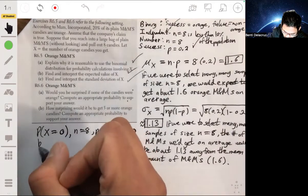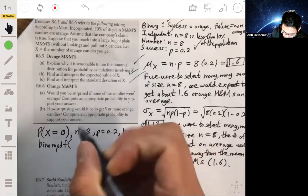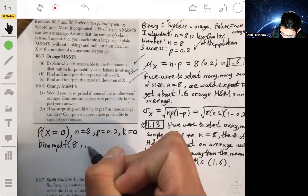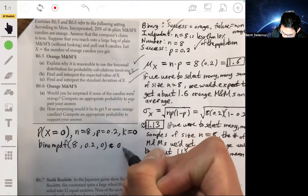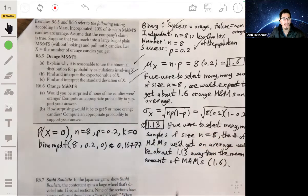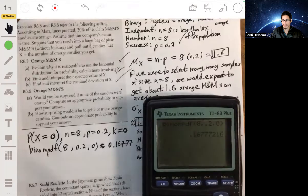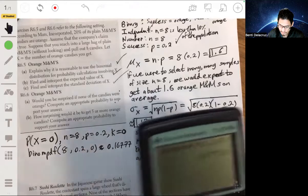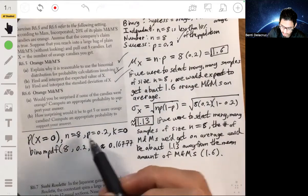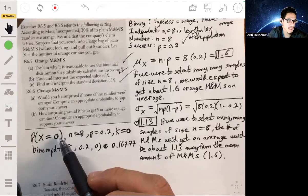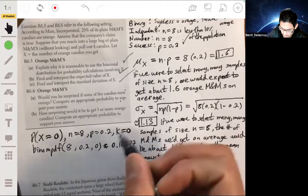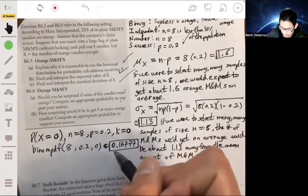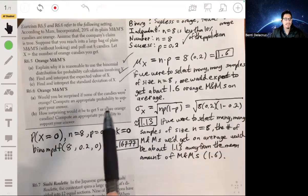We're going to use our calculator. We go to distribution, go to binomial PDF, and the syntax is N, P, K. So N is eight, P is point two, K is zero. Binomial PDF 8, 0.2, 0, and I get about a probability of 0.6777. If you have a newer calculator, a newer version, you won't have to memorize the syntax. It's going to probably have space for you to enter N, P, and K explicitly. So the probability that we would expect to get zero orange candies if we selected eight is about 16.7%.